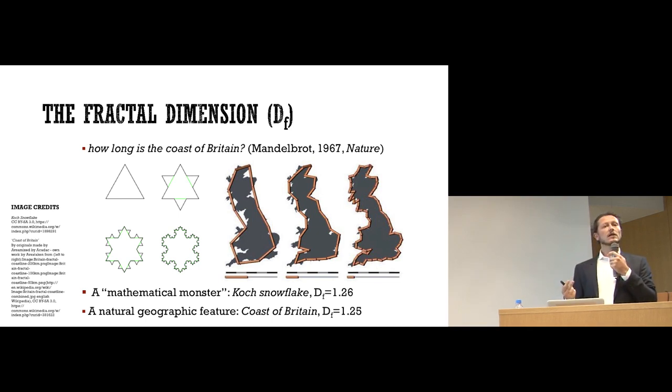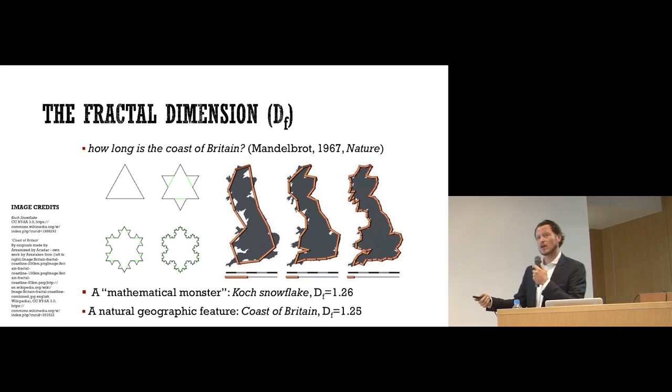So Mandelbrot's point was, forget about the simple measurement of length. We need a better measure that helps us understand how complex is the coast of Britain. And he found out that it's about as complex as this 1.25 fractal dimension that comes up in my talk a lot. And it turns out that this mathematical monster, the Koch snowflake, almost exactly the same fractal dimension, 1.26. So math helps us understand natural objects, even very complex ones.